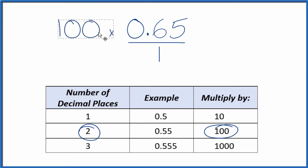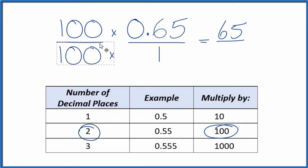So 100 times 0.65, that gives us 65, and that's a whole number. But we can't just multiply the numerator by 100. We also need to multiply the denominator by 100. And since 100 over 100 equals 1, we're multiplying by 1. We haven't changed the value, just the way it's written. So let's multiply 100 times 1. That gives us 100.